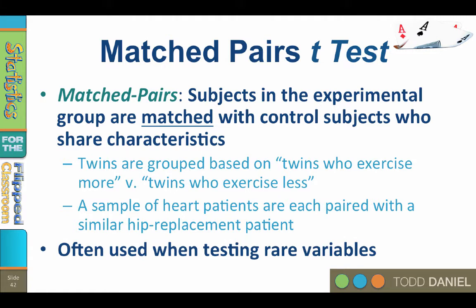Matched pairs studies are often used when the experiment is testing rare variables, such as a rare form of cancer, or comparing psychopaths to other incarcerated individuals who are not psychopathic. Because we are deliberately matching people in each group, the groups are not independent of one another.